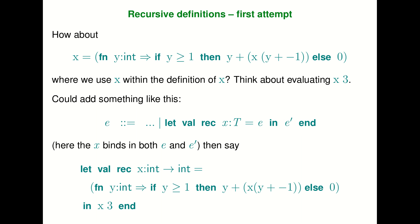Now let's go to recursive definitions. Here is a function we want to implement recursively: we want to define a function x that takes an argument y. If y is greater than one, it returns y plus the recursive call x applied to y minus one, else zero. This is just adding up all the numbers from whatever the argument is down to zero.